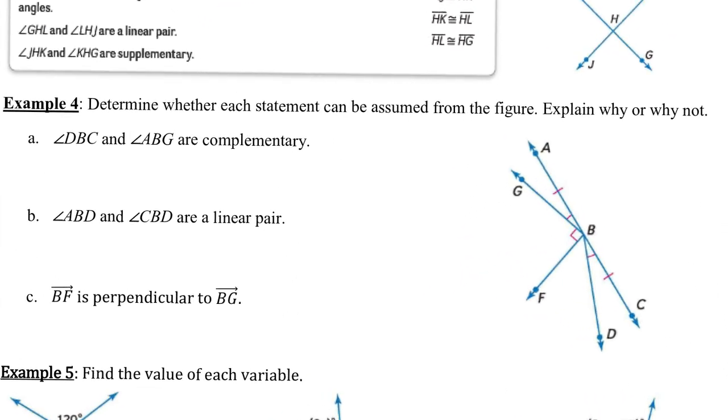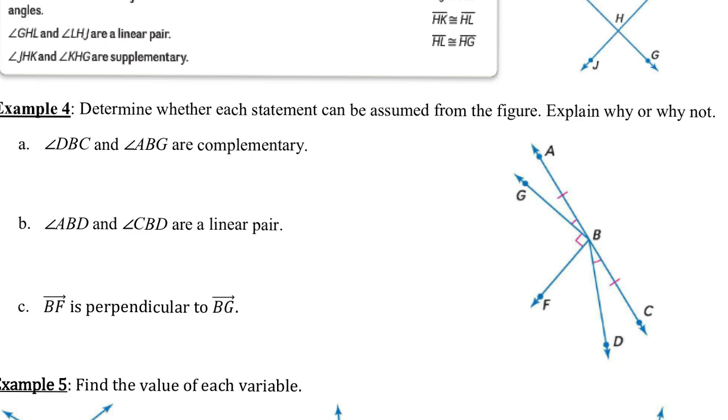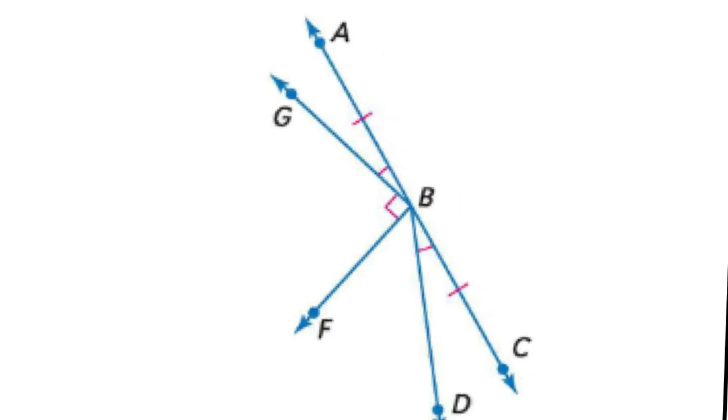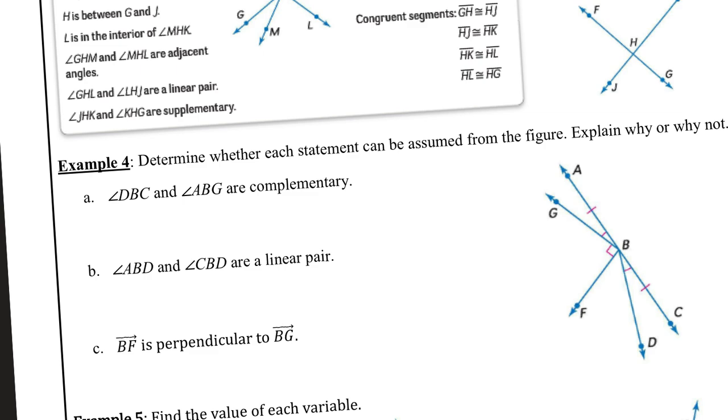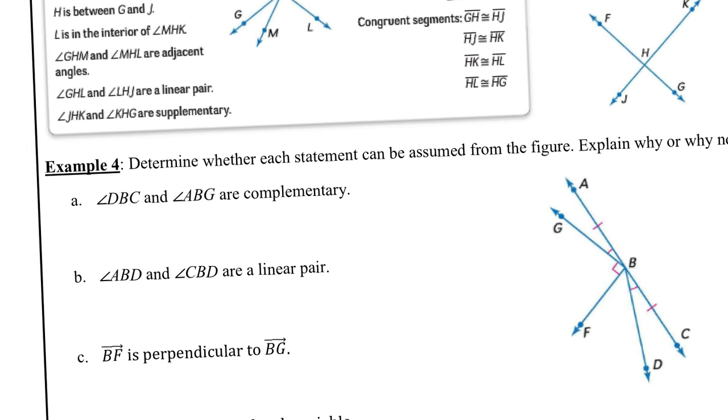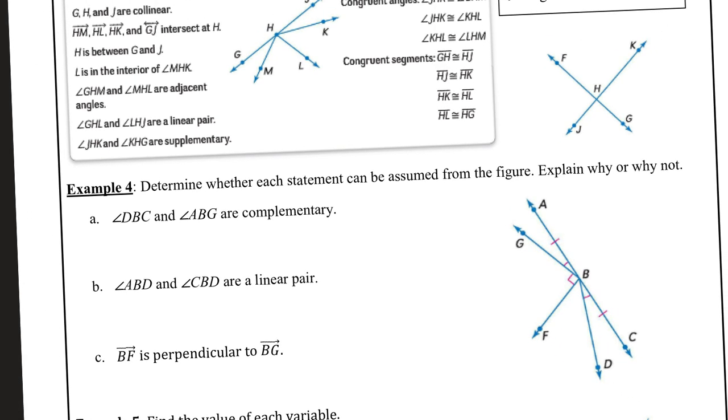So we're going to take that knowledge into applying it to this right here. In this picture, we are given that this segment AB is congruent to this segment BC. And this little angle ABG is going to be congruent to CBD. And then also GBF is a 90 degree angle. That's what we're given. We're going to determine whether each statement can be assumed from the figure and then we'll explain why or why not.